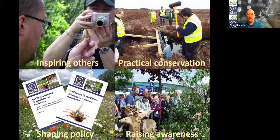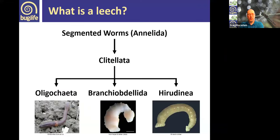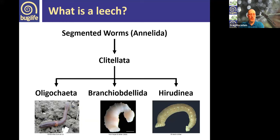Today I'm going to talk about leeches. As Ciarán said, they're related to earthworms. So what is a leech? They're segmented worms in the phylum Annelida. They're in the class Clitellata, which means 'with a clitellum'. The Clitellata splits into three subclasses: the Oligochaeta, which are earthworms and relatives; the Branchiobdellida, which are leeches found only on crayfishes — three species in the UK; and then the true leeches, the Hirudinea, which we'll be covering today.